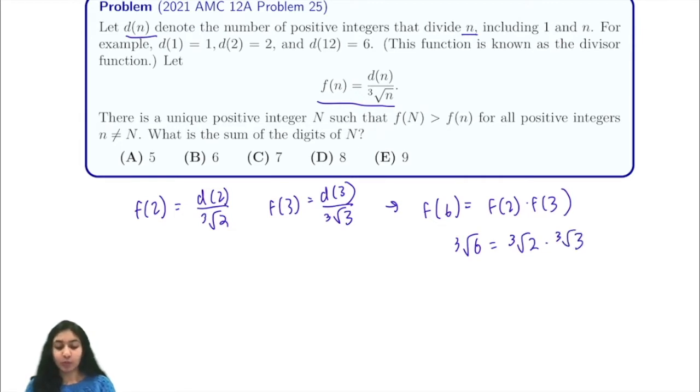So what this problem actually breaks down to, rather than this complicated expression, is just finding for each prime where f(n) is the largest and then multiplying all these together to find our capital N where N is the largest. Let's start by looking at powers of 2.